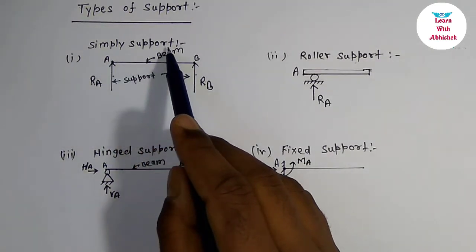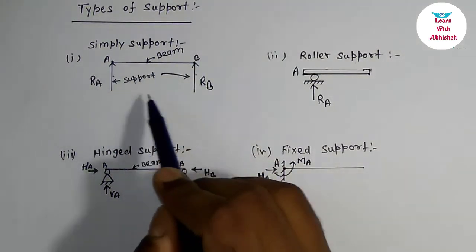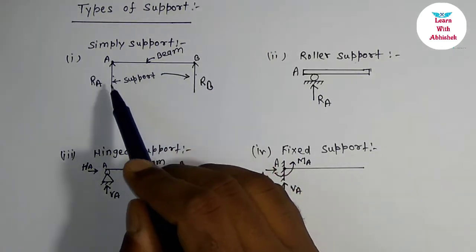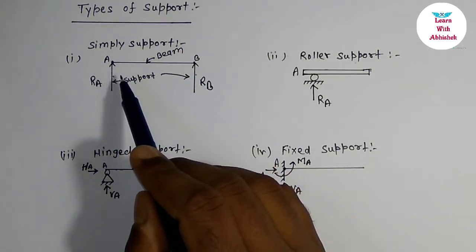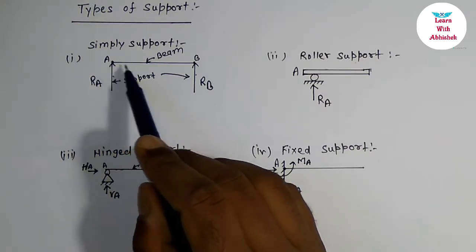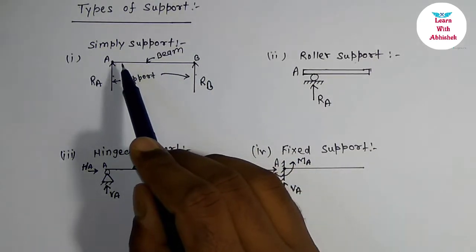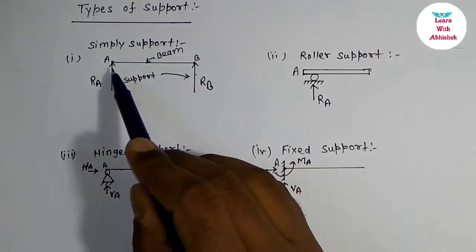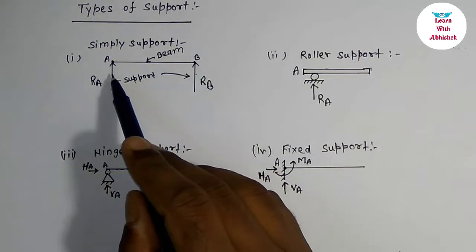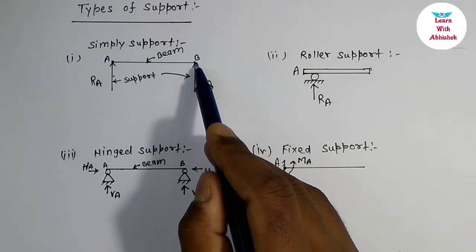First we will discuss simply support. This is the diagram for simply support. In simply support, the end of the beam rests on the rigid support — these are the end points of the beam resting on the rigid support, these are the rigid supports — and one reaction component along the beam at point A and at point B.